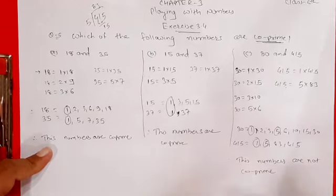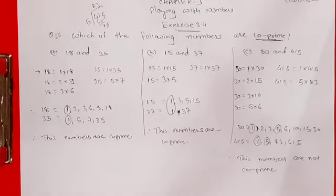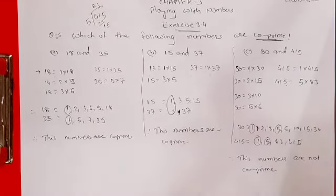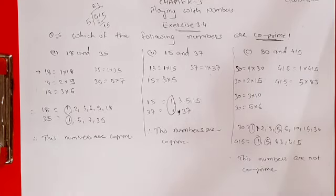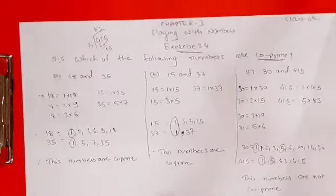The definition of co-prime is: for two numbers, or however many numbers are given, only 1 should be their common factor.